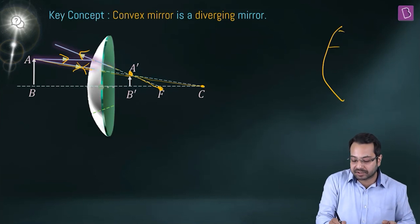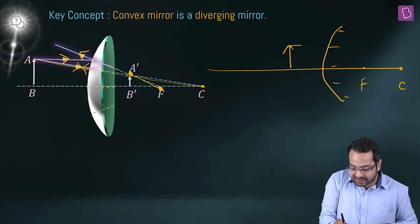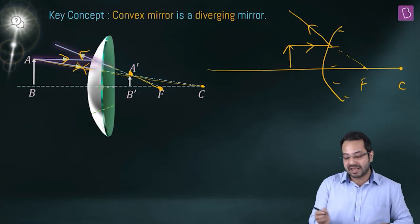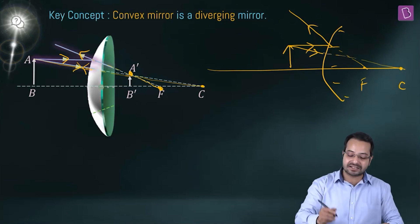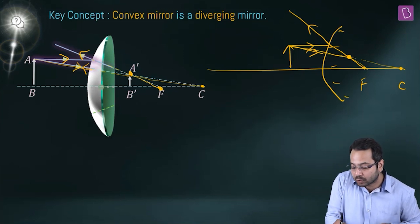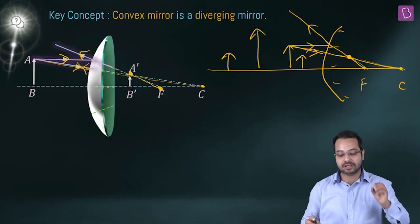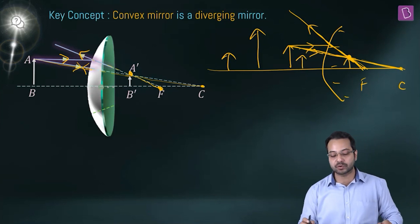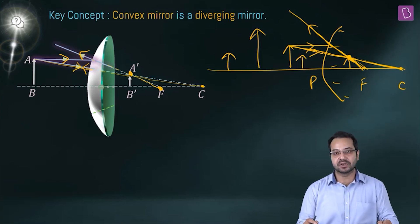No matter where the object is — closer or farther — the light is always diverged, appearing to come from the focus. The intersection of the line through F and the line through C always occurs between the pole and the focus. So the image is always formed between the pole and focus, is upright, and is diminished.